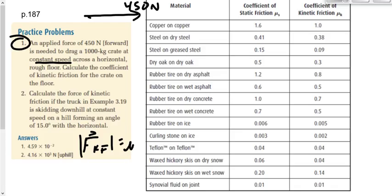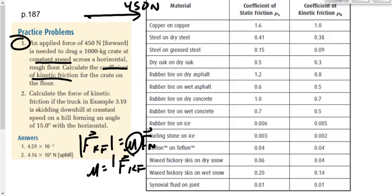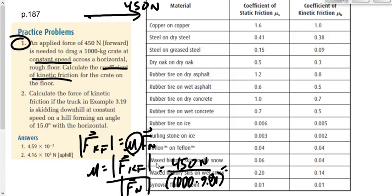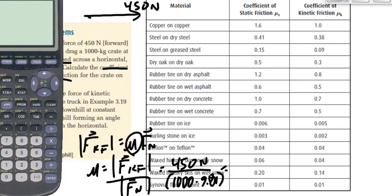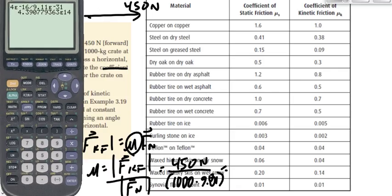The force of kinetic friction equals mu times the normal force. We're going to solve for mu: mu equals Fkf over Fn. The force of kinetic friction is 450 newtons, and the normal force is 1,000 times 9.81. So: 450 divided by (1,000 × 9.81).